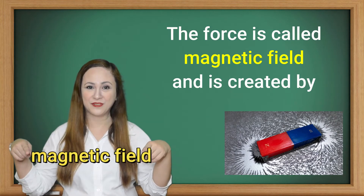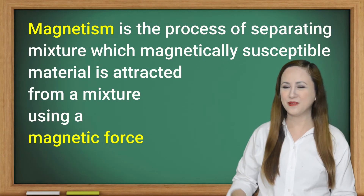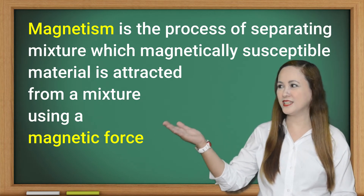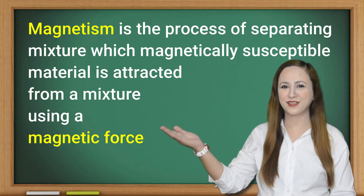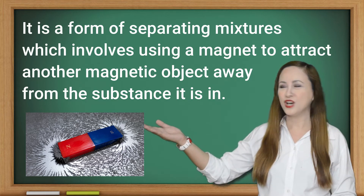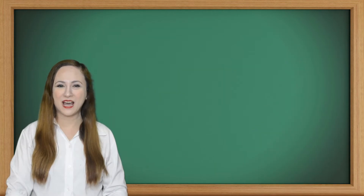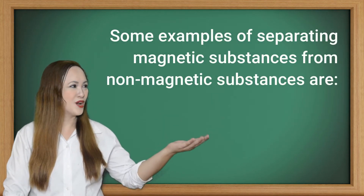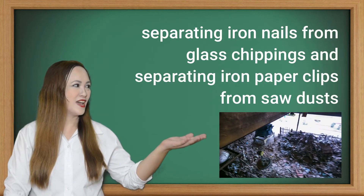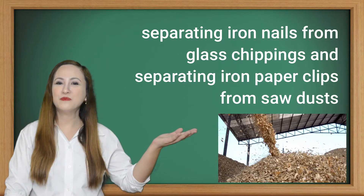The force is called a magnetic field and is created by magnets. Magnetism is the process of separating a mixture in which magnetically susceptible material is extracted from a mixture using a magnetic force. It is a form of separating mixtures which involves using a magnet to attract another magnetic object away from the substance it is in. Some examples are separating iron nails from glass chippings and separating iron paper clips from sawdust.